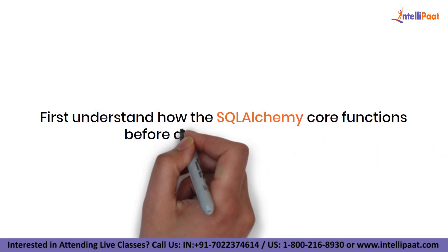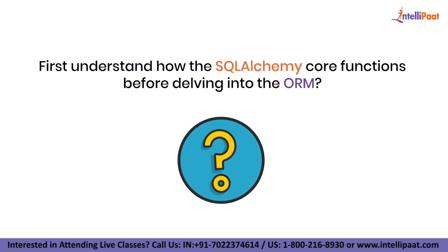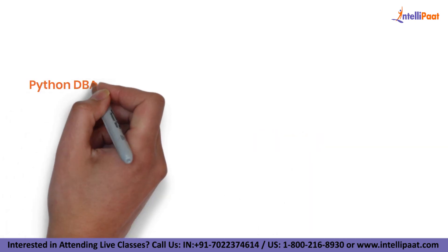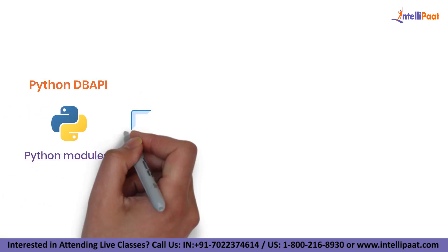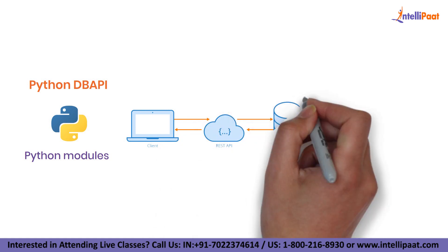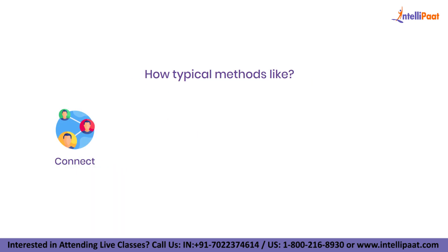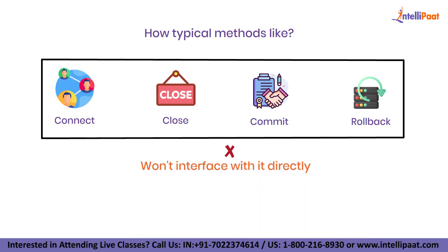We must first understand how the SQL Alchemy core functions before delving into the ORM. The functionalities are segregated into four different classes. The first one is DBAPI. To define how Python modules that link with databases should expose their interfaces, the Python DBAPI, an acronym for database API, was developed. It's important to be aware that this API dictates how typical methods like connect, close, commit and rollback must work.